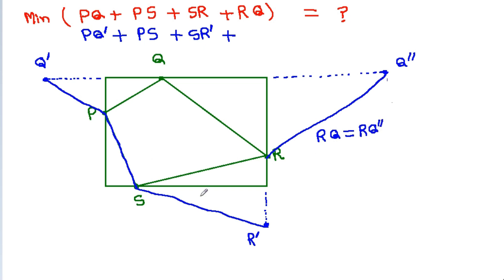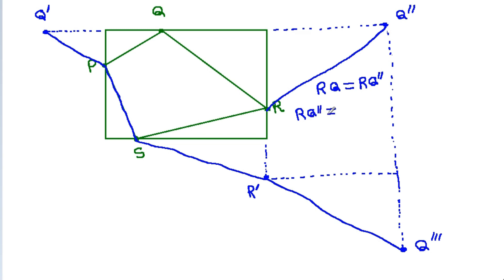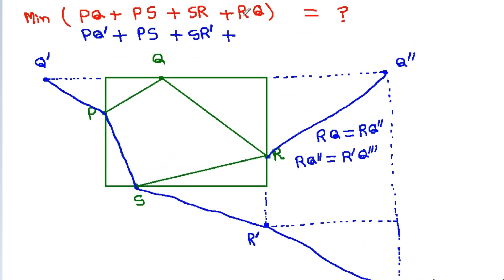But the blue lines are not connected. So if we again take the mirror image of Q double dash with respect to this line, then this point will be Q double dash. And if we join R dash Q double dash such that RQ double dash is equal to R dash Q double dash, so RQ.